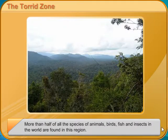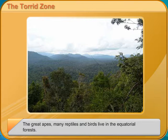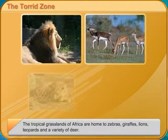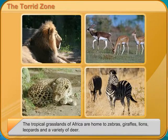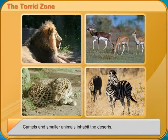More than half of all the species of animals, birds, fish, and insects in the world are found in this region. The great apes, many reptiles and birds, live in the equatorial forests. The tropical grasslands of Africa are home to zebras, giraffes, lions, leopards and a variety of deer. Camels and smaller animals inhabit the deserts.